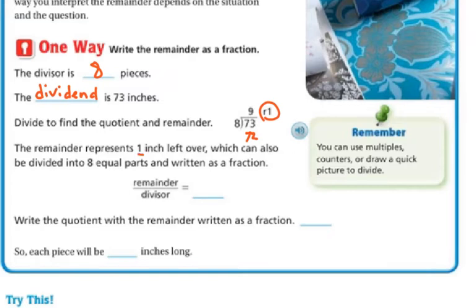That remainder represents one inch that's left over, which can also be divided into eight equal parts and written as a fraction. So the remainder is one, and the divisor is eight. So it can be interpreted as one-eighth. So now when I write my quotient or my answer with the remainder written as a fraction,